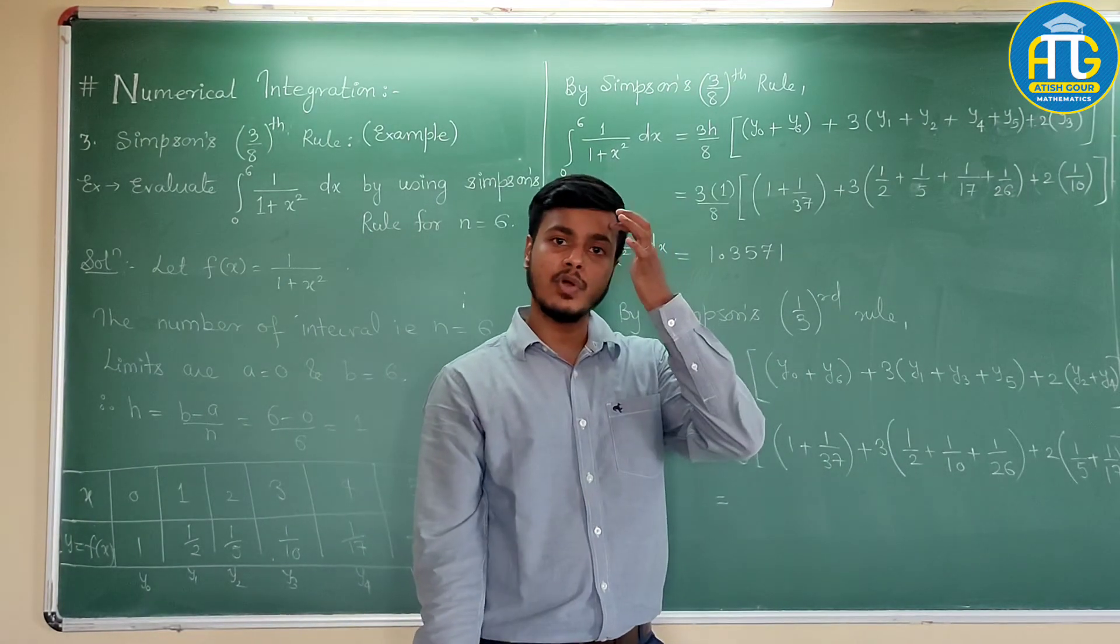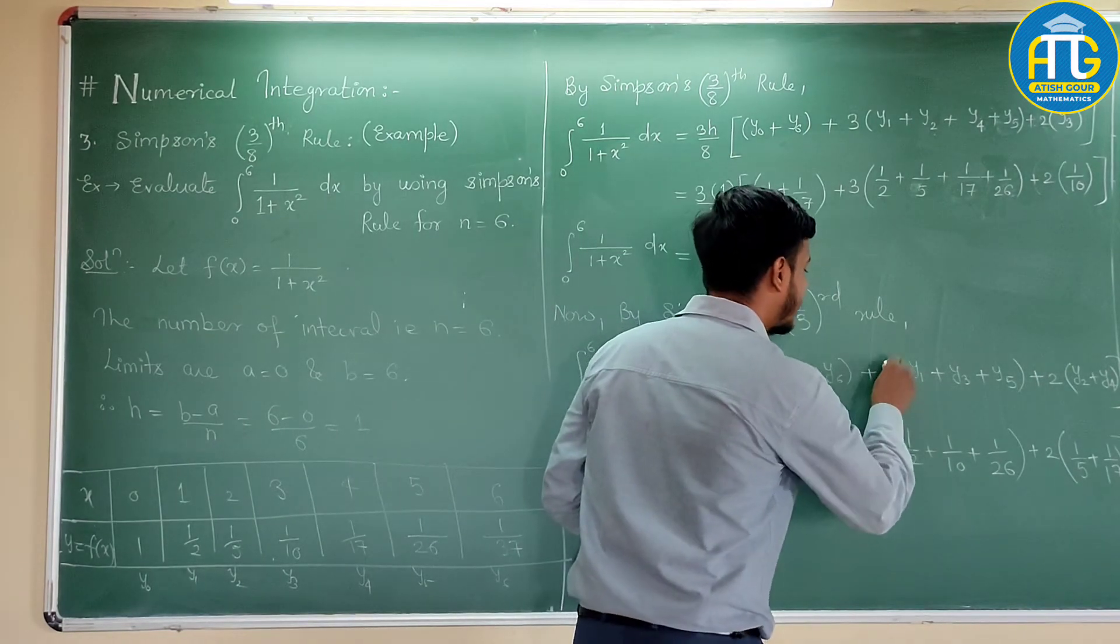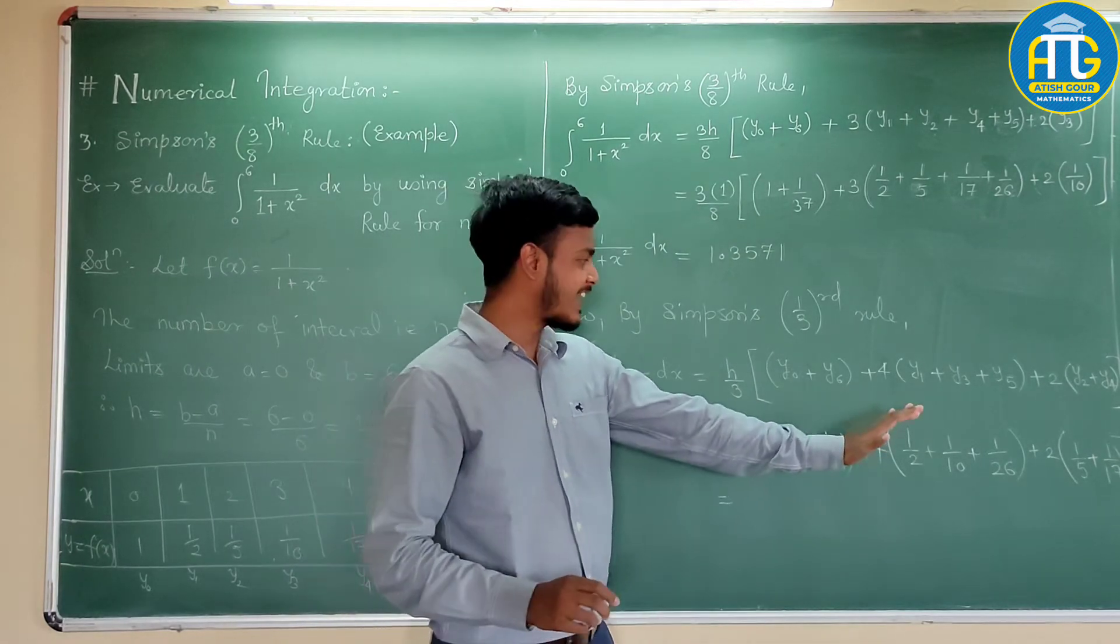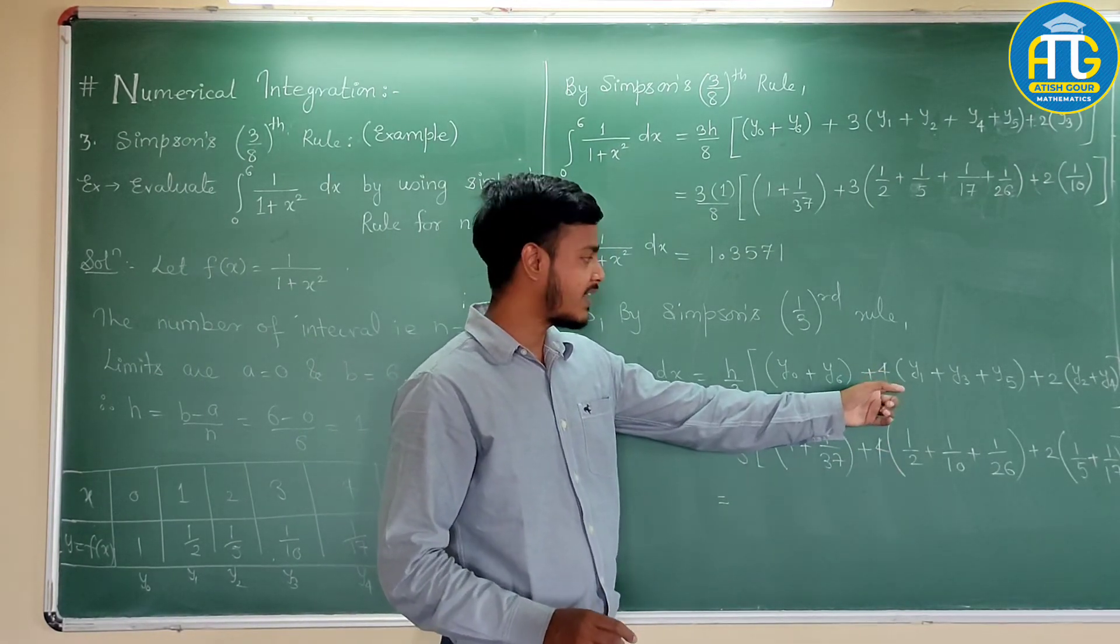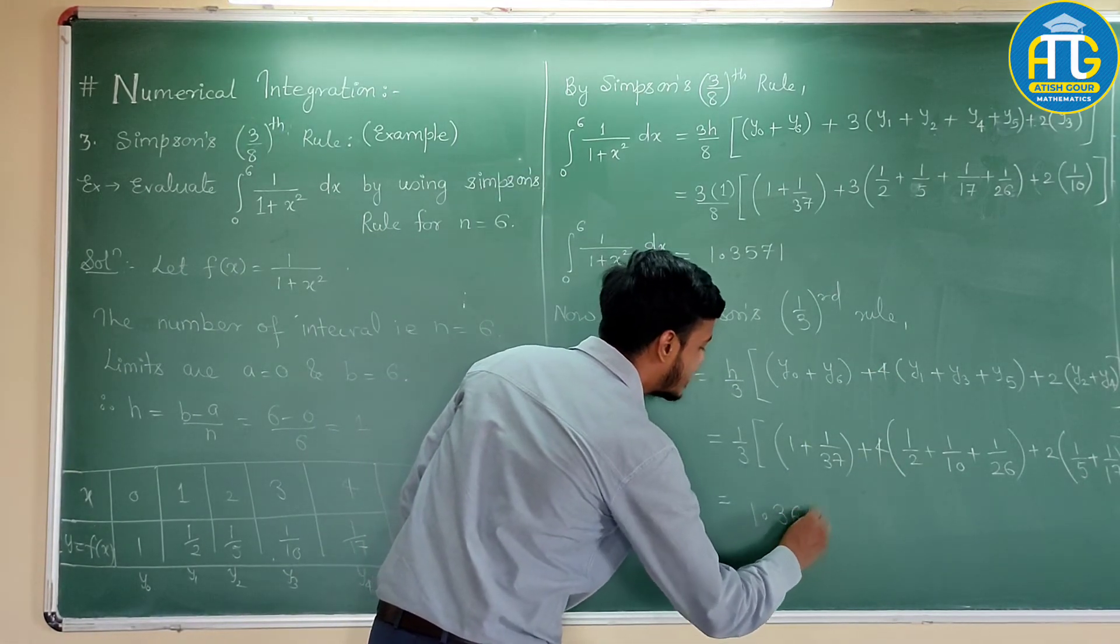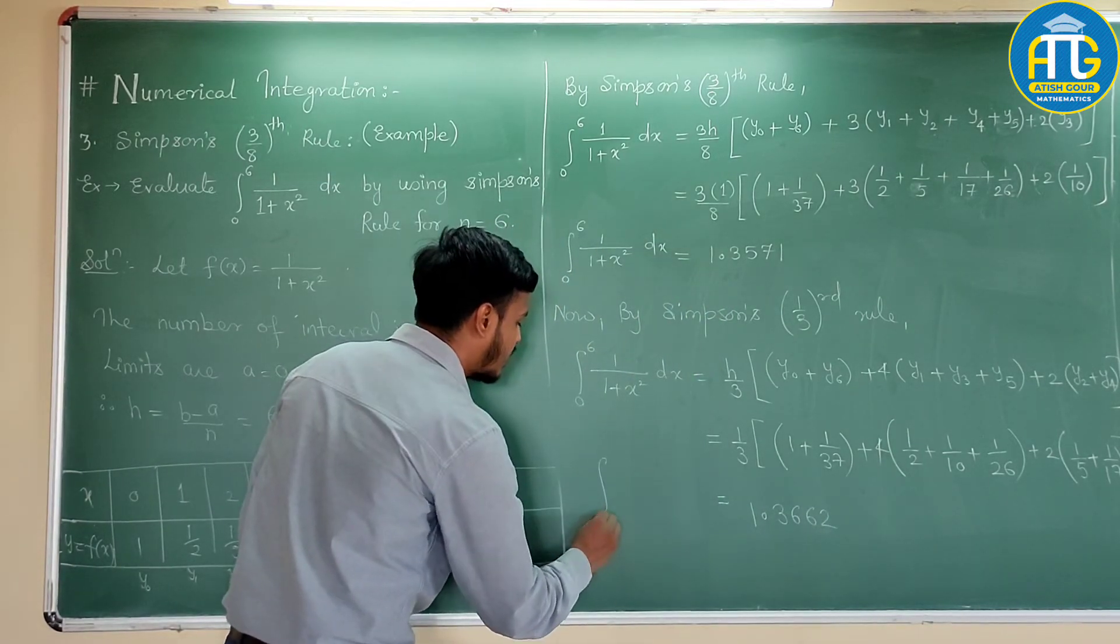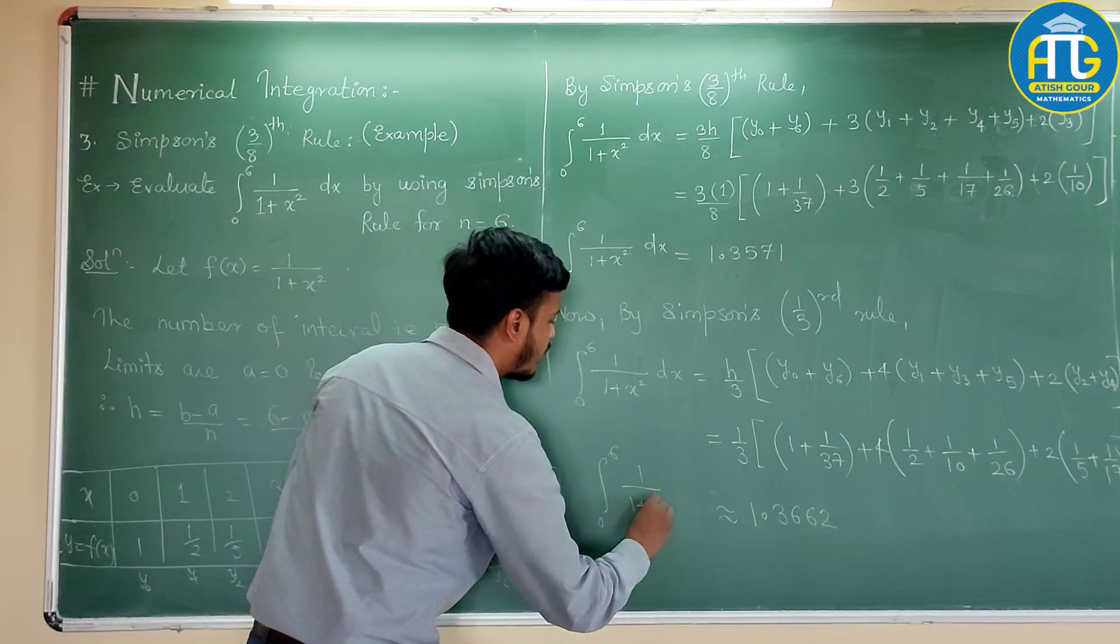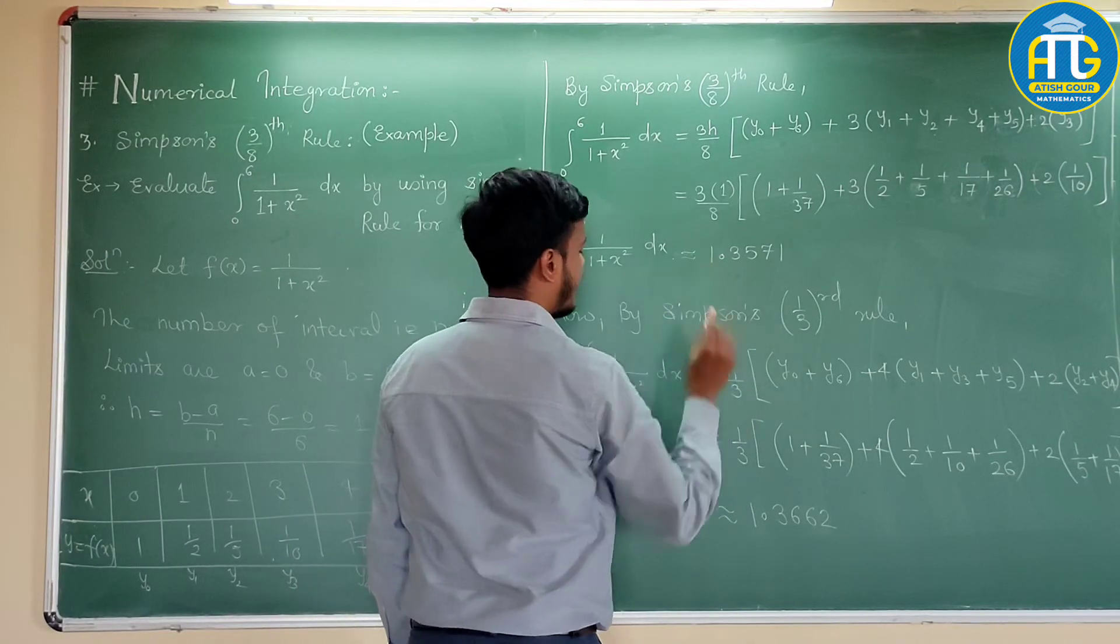So, I hope you might have got the answer. So, just one correction here. This is not 3. This is 4. So, you might have done the calculations. I forgot to write it is 4 rather than 3. So, what answer you are getting? 1.3662. That is the value of this integral. Approximate answer. 1 upon 1 plus x squared dx.